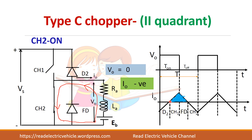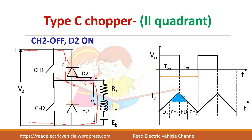In first quadrant operation, when switch one is on, current increases, and when it freewheels, current decreases — but in both cases it remains positive. When CH2 is on, the current flows in the reverse direction and output voltage is zero. When CH2 is switched off, the current then flows through diode D2 back to the supply, and the energy stored in the DC motor is fed back to the supply.